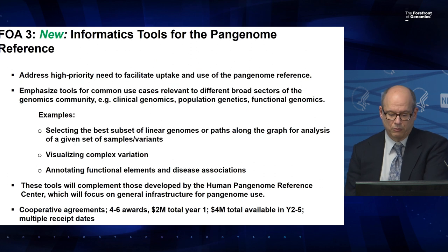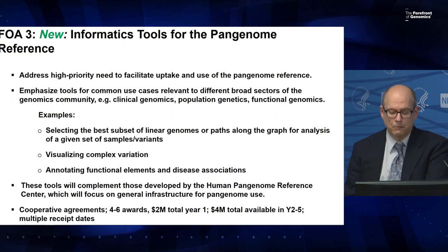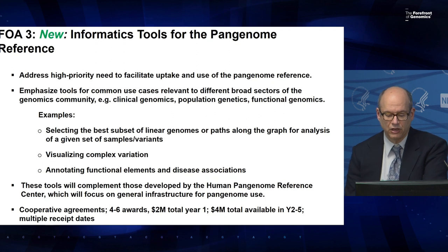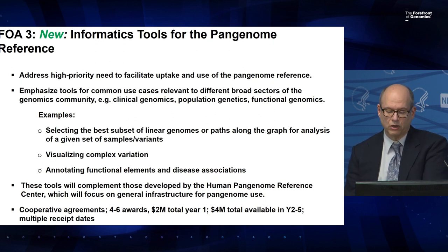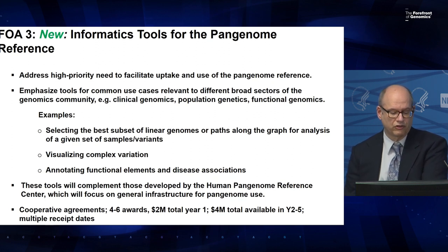A new FOA addresses the need to build informatics tools for use of the pan-genome reference. Emphasis will be on tools for common use cases relevant to different broad sectors of the genomics community — for example, clinical genomics, population genetics, or functional genomics. Possible examples include selecting the best subset of linear genomes or paths along the graph for a given set of samples being analyzed, visualizing complex variation in disease-associated regions, and annotating functional elements. These tools will complement those developed by the Human Pan-Genome Reference Center, with the latter focusing on general infrastructure for pan-genome use. We're proposing this as cooperative agreements — four to six awards — with $2 million total in year one, rising to $4 million total available in years two to five, with multiple receipt dates.